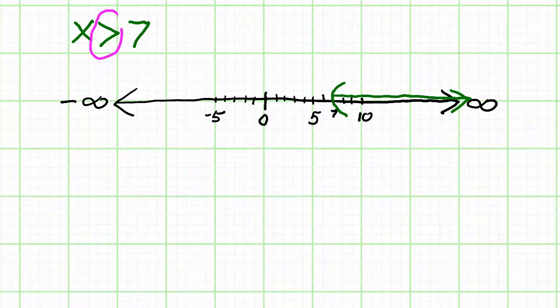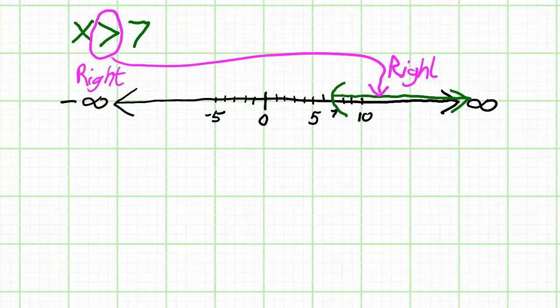The inequality sign points to the right, and so my arrow will also point to the right, as long as my variable, the letter, is on the left side of the inequality.